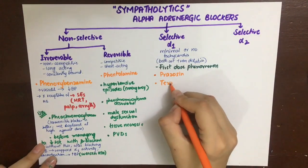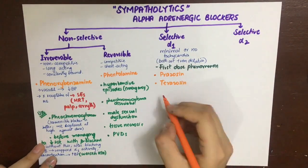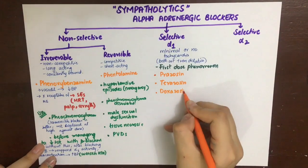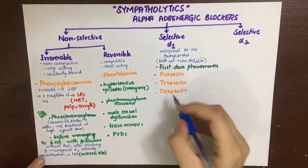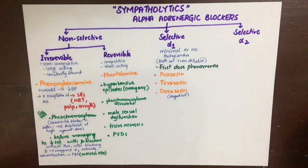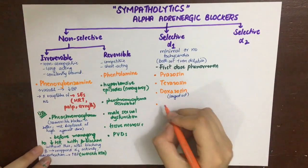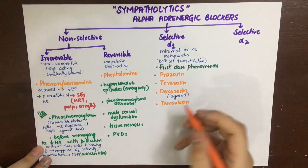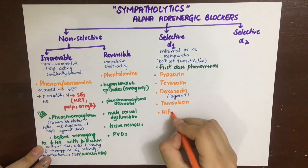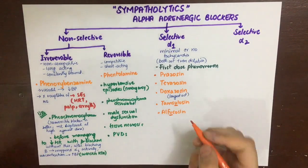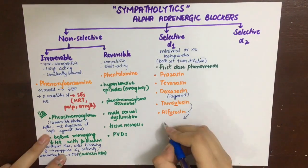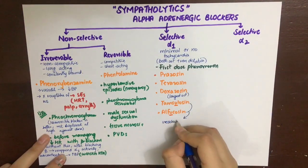The drugs in this class include prazosin, terazosin, doxazosin (which is the longest-acting), tamsulosin, and alfuzosin. Both tamsulosin and alfuzosin have a 'u' in their name and are uroselective.